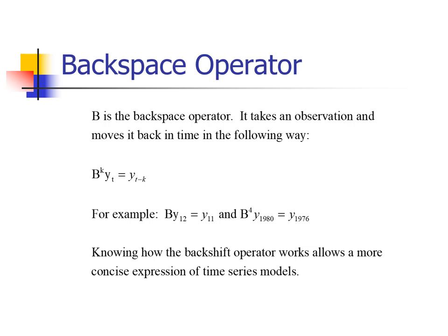It's very strange, but we're going to define this product as Y sub T minus K. So for example, B times Y12 is Y11. And B to the power 4 times Y sub 1980 is Y sub 1976, assuming that we're dealing with yearly data — so each time point is a year, and we go four years back to 1976.